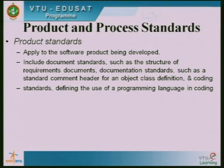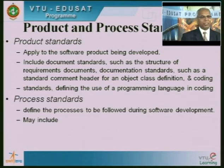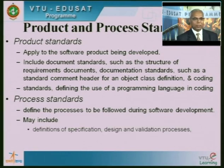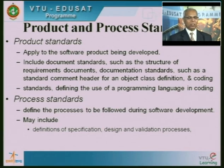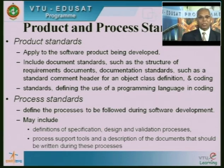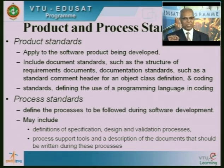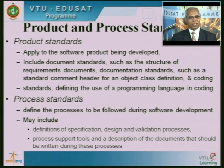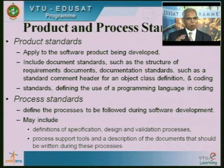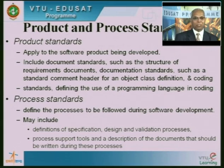Standards also define the use of programming language in coding. Process standards define the processes to be followed during development. They include things like definition of specification, design and validation processes at each stage, process support tools, and description of documents that should be written during these processes. For example, for requirements definition, we prepare a checklist and interview all stakeholders, then validate the requirements with seniors who identify loopholes. This is a defined process that ensures the requirements definition is comprehensive, complete, and without any errors.